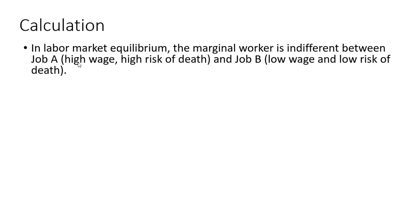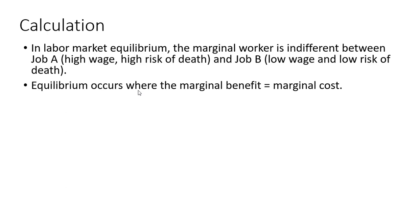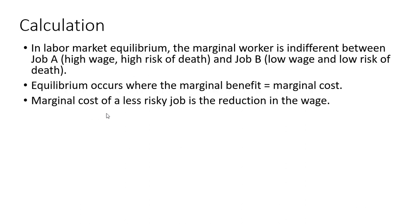The calculation. In labor market equilibrium, the marginal worker is indifferent between Job A, which has high wages and high risk of death, and Job B, an occupation with low wages and a lower risk of death. Equilibrium occurs where the marginal benefit equals the marginal cost. The marginal cost in this context of a less risky job is the pay cut — the reduction in the wage from taking a less risky job with lower pay.